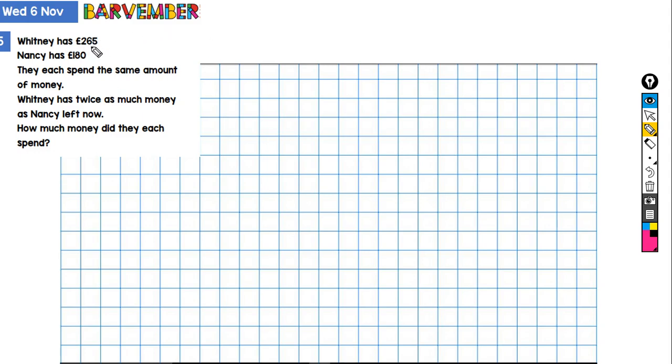Let me explain. So Whitney in the beginning has £265 and Nancy has £180. And the difference is £85. They each spend the same amount of money, so the difference in the end situation is going to be the same as the difference in the beginning.